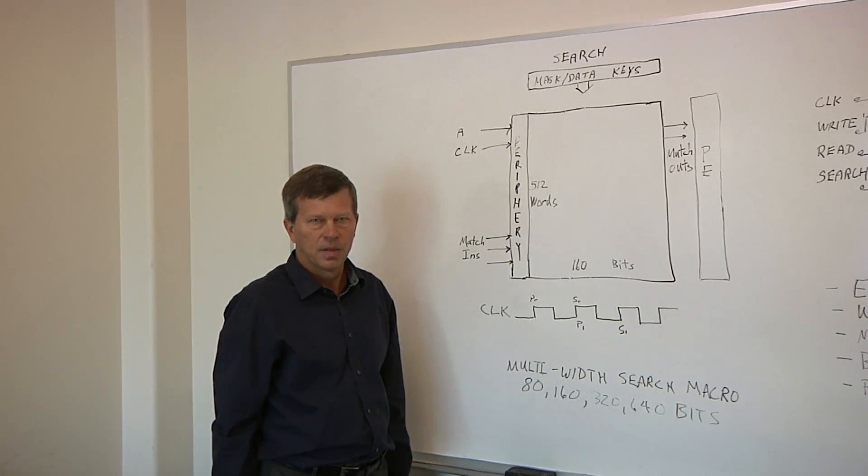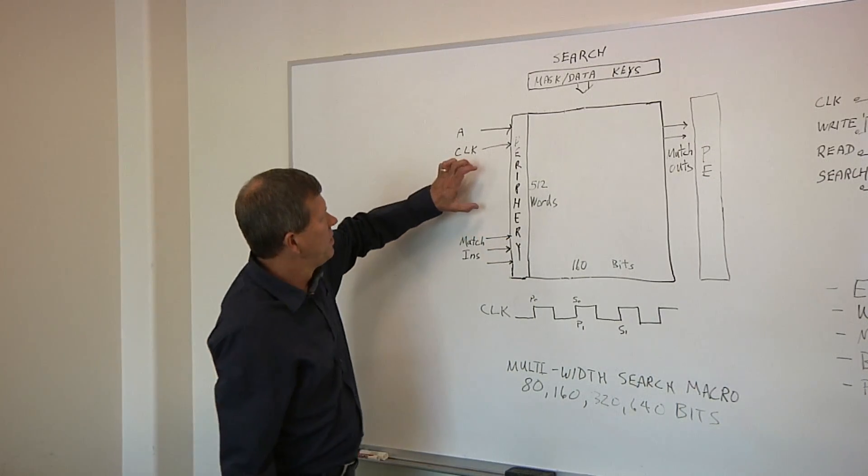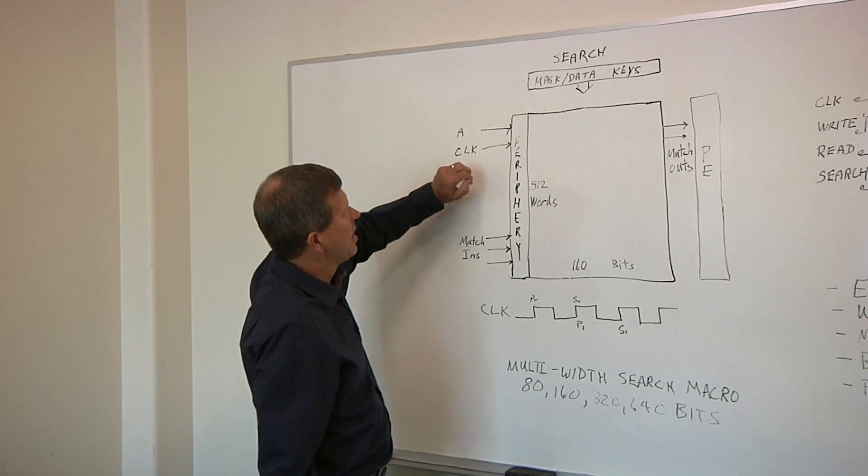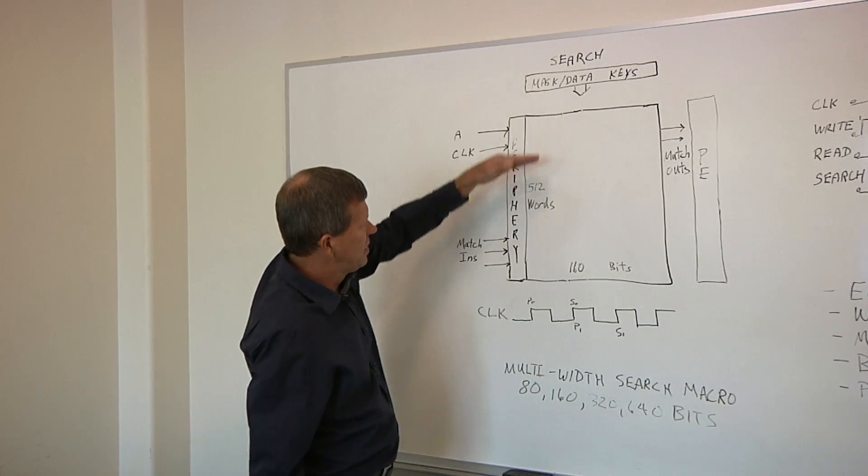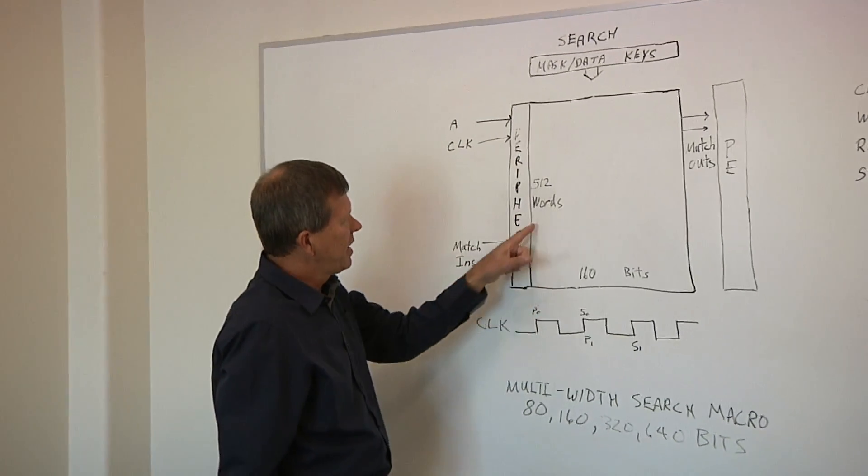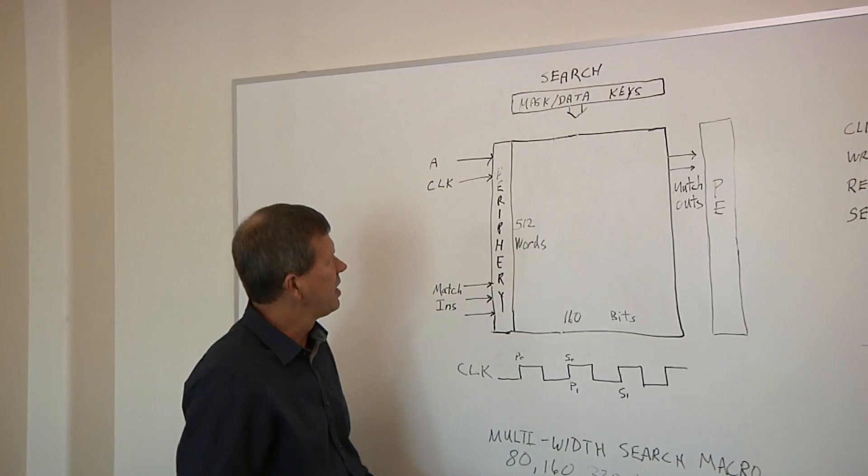Okay, why don't you draw this out for us? So what are we looking at here? We're looking at a high-level block diagram of a TCAM where you have the mask and data keys up top being presented to the TCAM array. And in this case, it's a 512 by 160 TCAM we're going to talk about today.